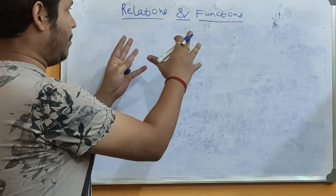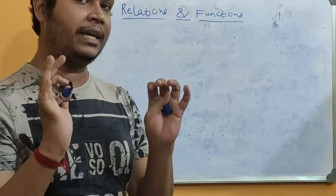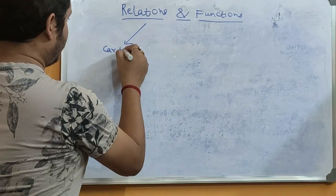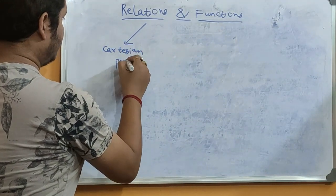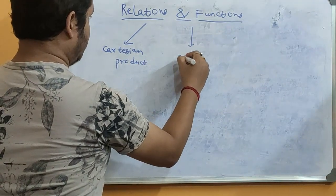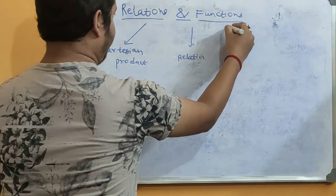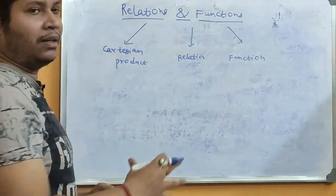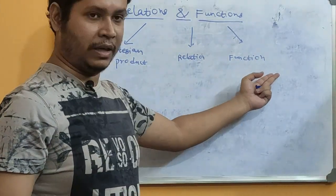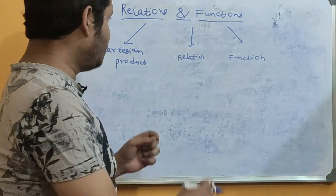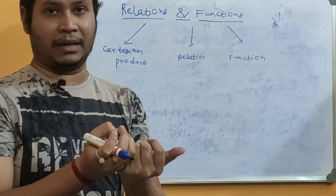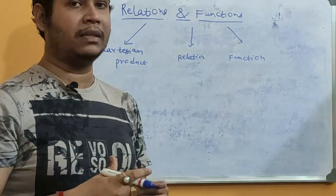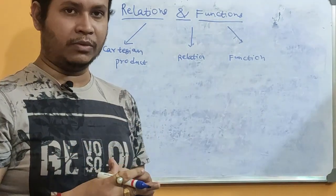Now, in this particular chapter, in the beginning, we first have to understand three particular terms. The first is the Cartesian Product. Then the next is Relation. And the third thing is a Function. Now, basically this entire chapter revolves around these three things. And to understand these, we have to specifically understand their basic meaning, how we represent them in general, and based on that, how we are going to work on our problems.